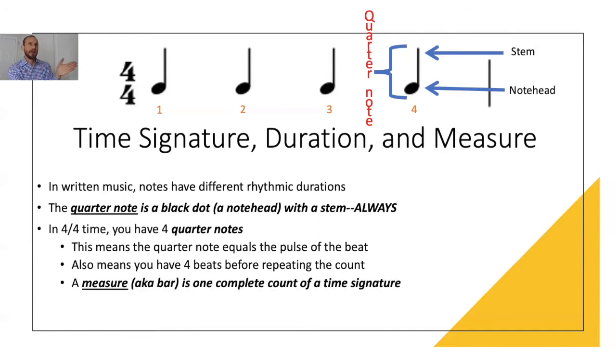A measure is one complete cycle that's always delineated by the bar line. A measure is also known as a bar, and the bar line denotes the end of the measure, the end of the four count. If you were to play this rhythm chart, it would just be one, two, three, four.